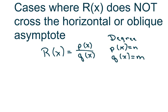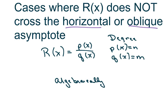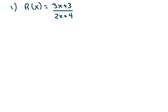We're going to go over six cases where the graph of R of X does not cross the horizontal or oblique asymptote. We're looking at how to show this algebraically. This video is just about how to show it algebraically, and the first step is to find the horizontal or oblique asymptote and then work on it from there.